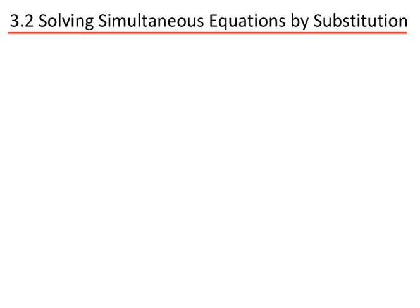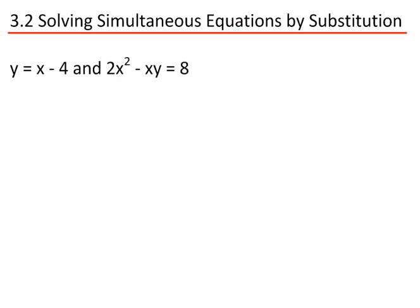We're going to work through an example of solving simultaneous equations by substitution, using y equals x minus 4 and 2x squared minus xy equals 8. If these were both lines on a graph, solving the simultaneous equations will give you the values of where they intersect — where the two equations are equal to one another using the same values of x and y.